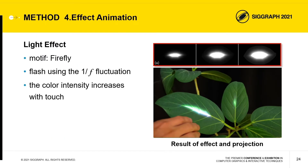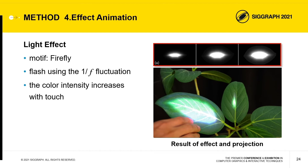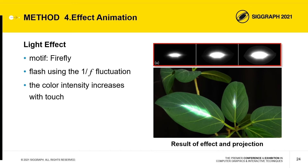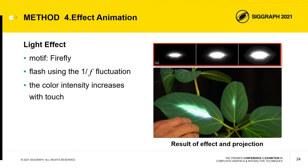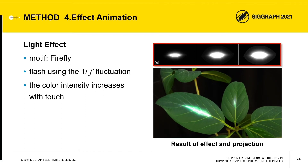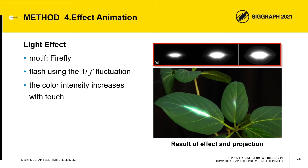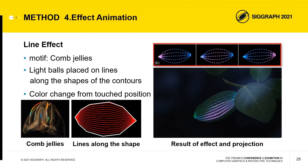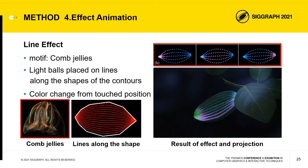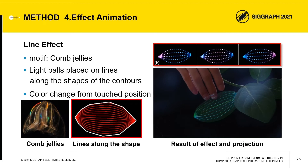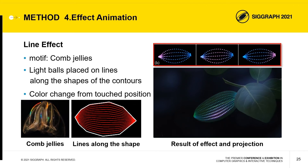The first is the light effect, whose motif is the firefly. The entire projection area flashes using 1/f fluctuation, which is seen in the flash of fireflies. Additionally, the color intensity increases when the user touches the targets. The second is the line effect, whose motif is comb jellies, which shine like neon signs by reflecting light. In the line effect, light balls are placed along the shapes of the contours, and their colors change from the touched positions.